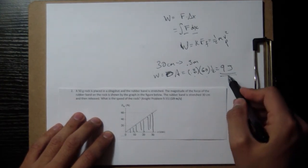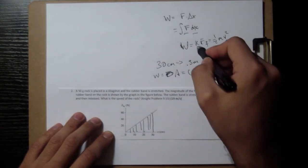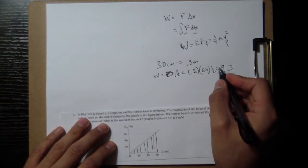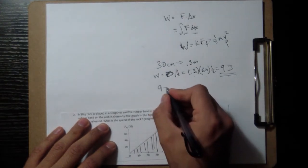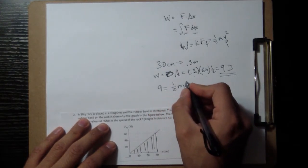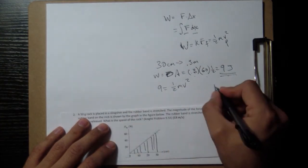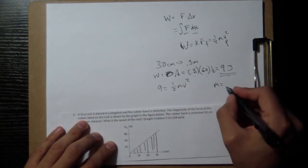And then that is going to be turned into kinetic energy. So if that turns into 1/2 mv squared, we have 9 equals 1/2 mv squared, but my mass is in grams, so I'll convert that into kilograms.